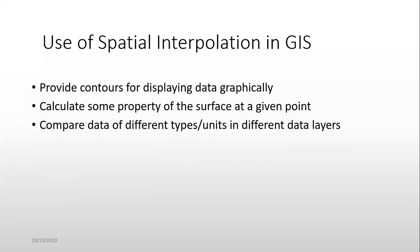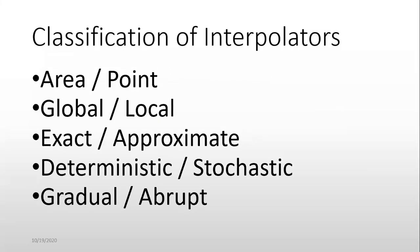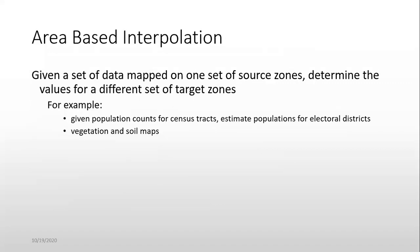Classification of interpolators: area-based, point-based, global, local, exact, approximate, deterministic, stochastic, gradual, and abrupt. Area-based interpolation: given data mapped on one set of source zones, determine values of different target zones. For example, given population counts for census tracts, estimate population for electoral districts. Vegetation and soil maps.